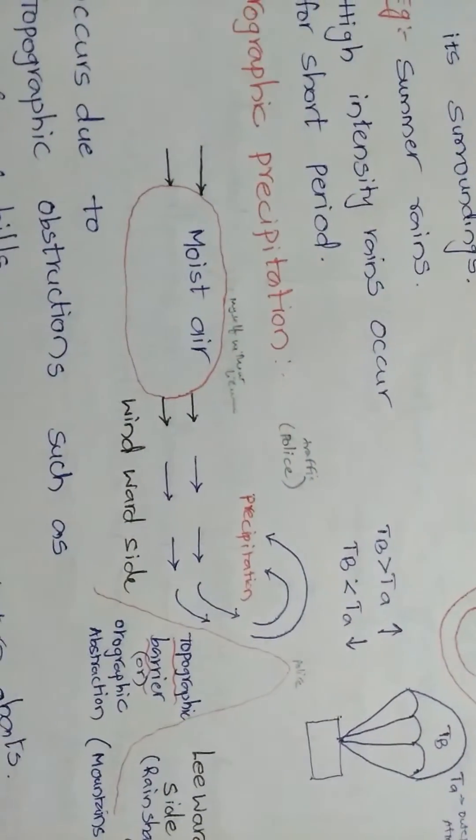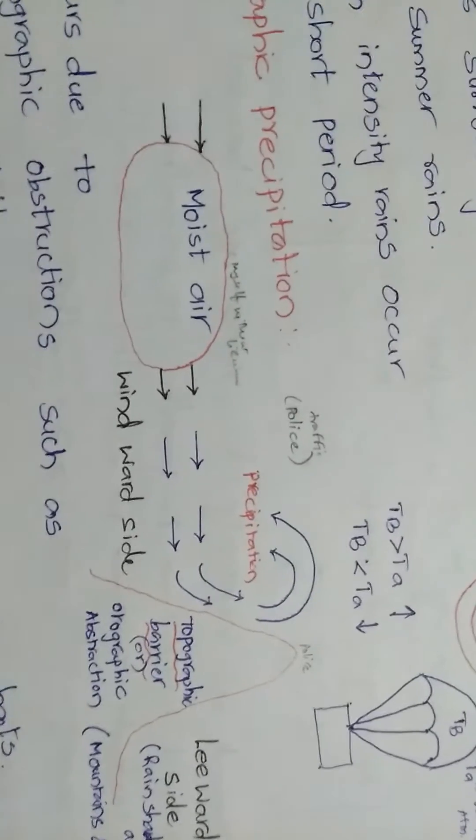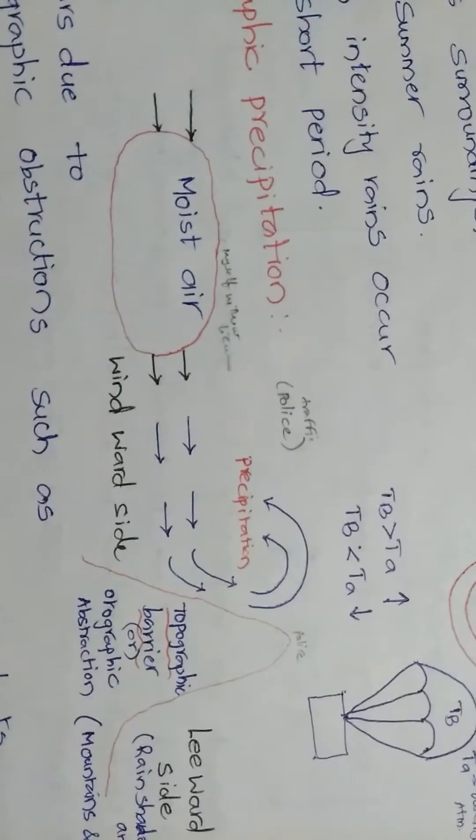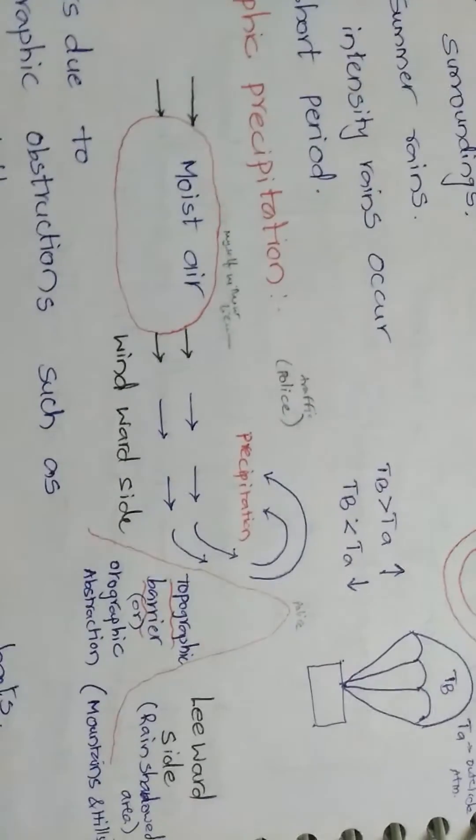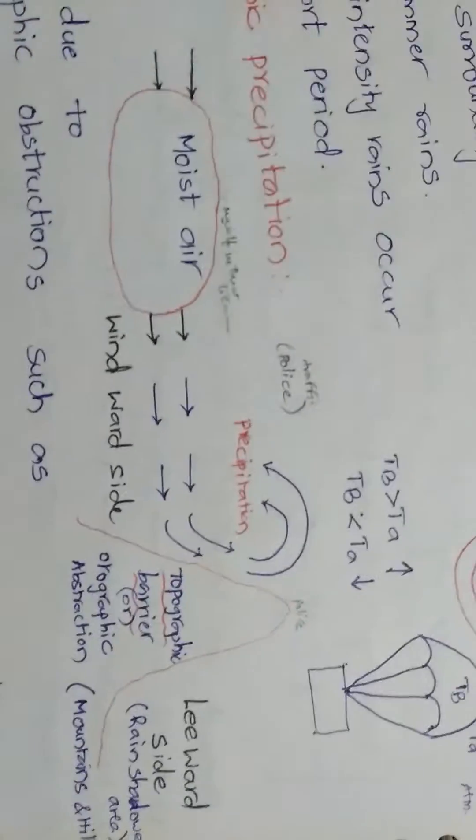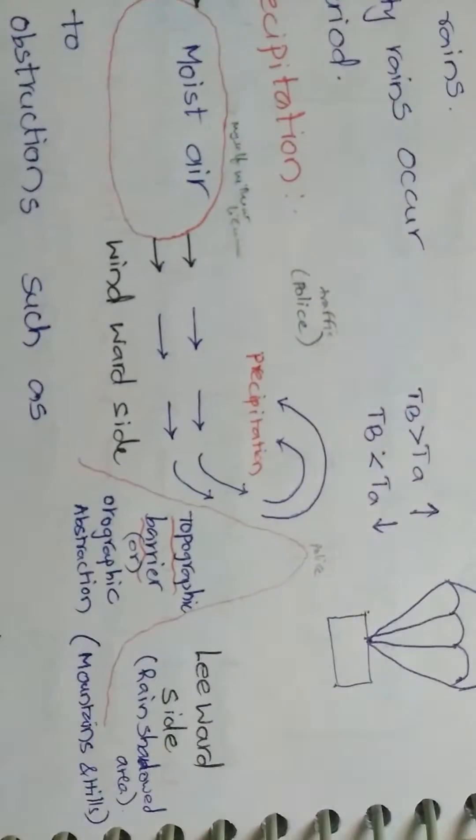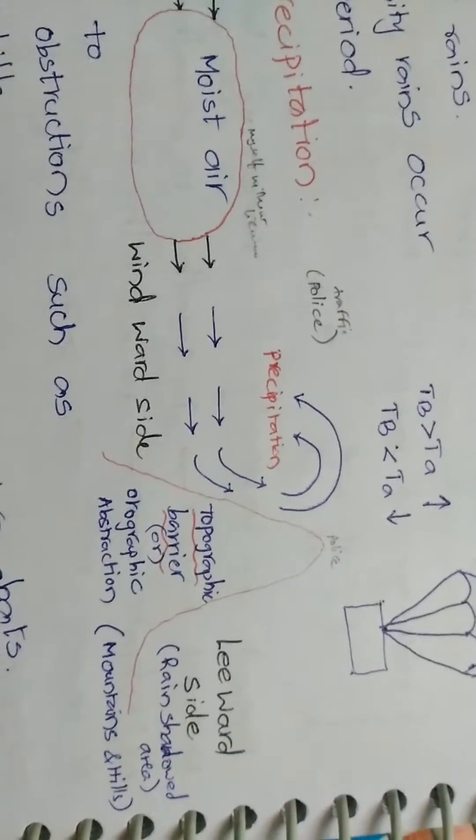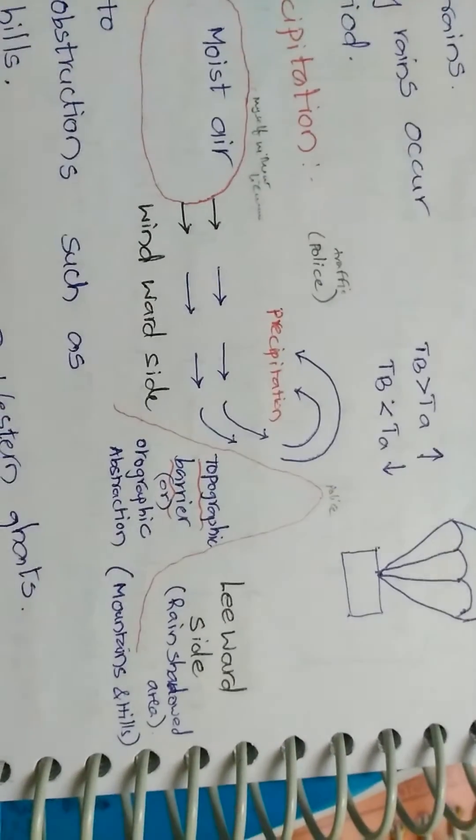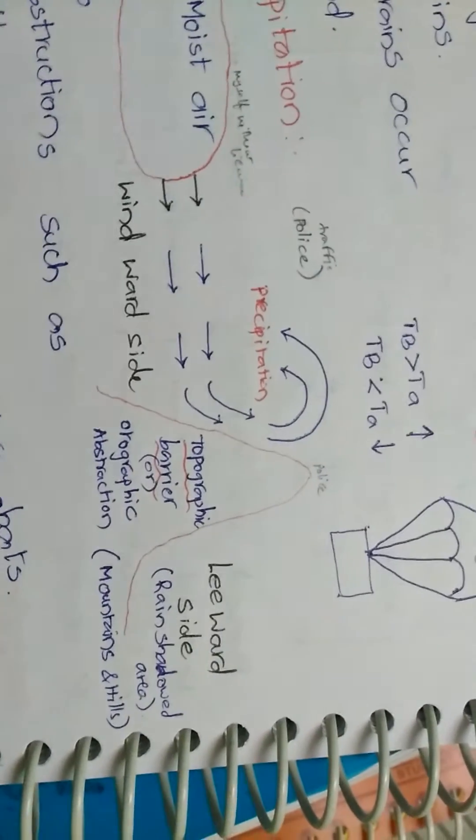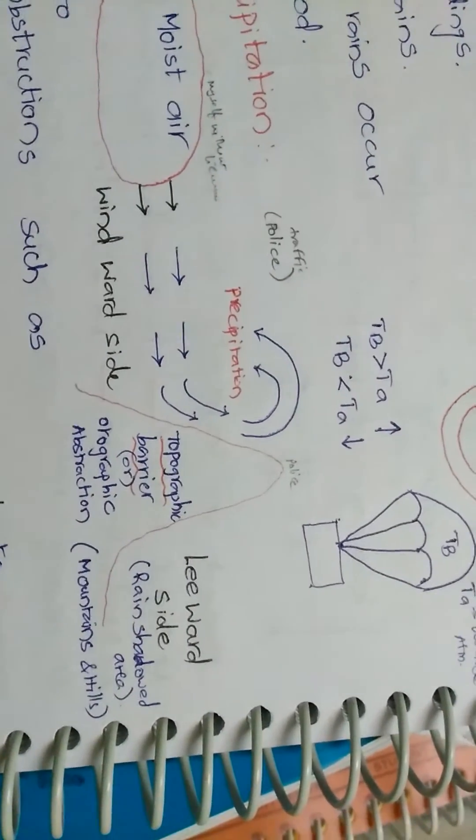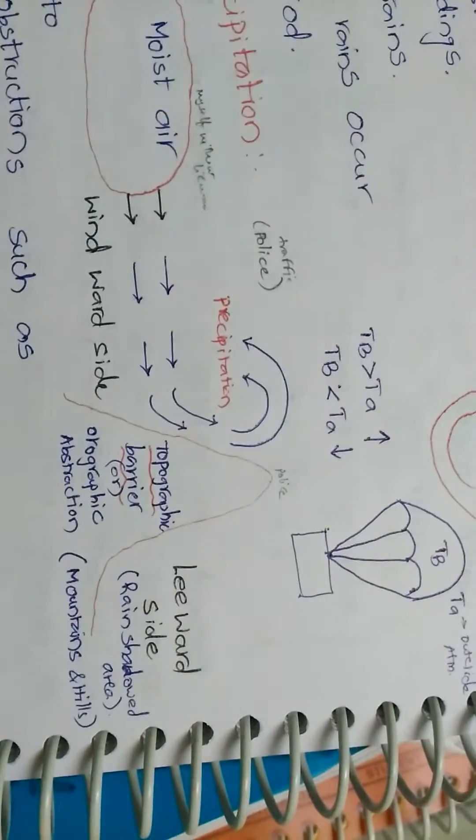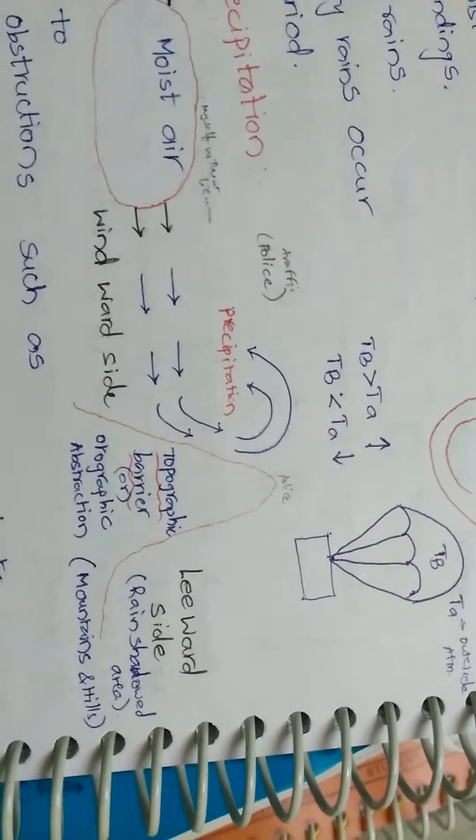The left of the topographic barrier is windward side and the right of the topographic barrier is leeward side. It is rain shadow area where there is no rain.